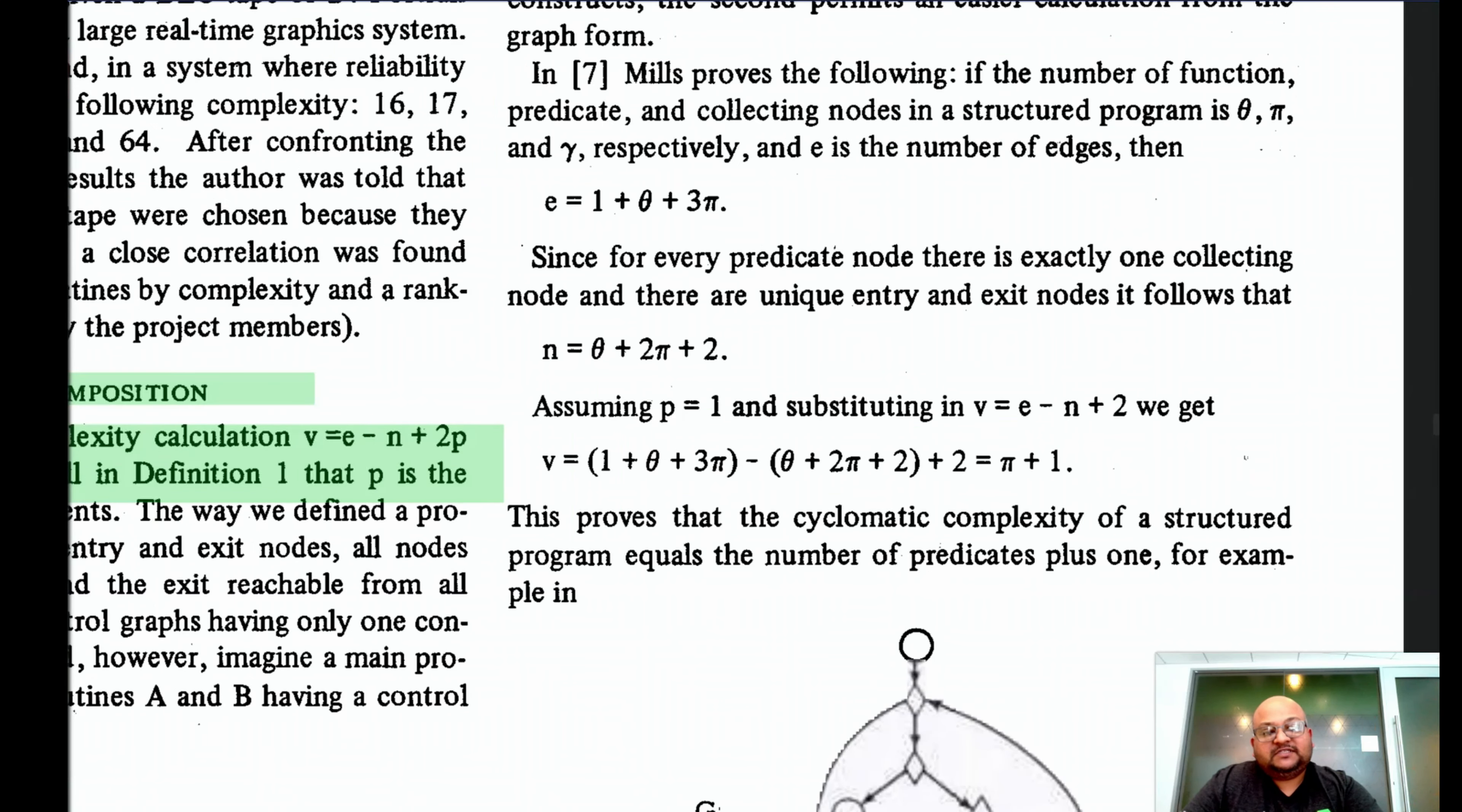And this is fairly easy to prove if you simply expand out the definition. We can derive some handy shortcuts if we have a program where the number of functions, predicates and collecting nodes is theta, pi and gamma respectively. We end up with this neat formula which says that its cyclomatic complexity is pi plus one, which is simply one more than the number of predicates in the function.